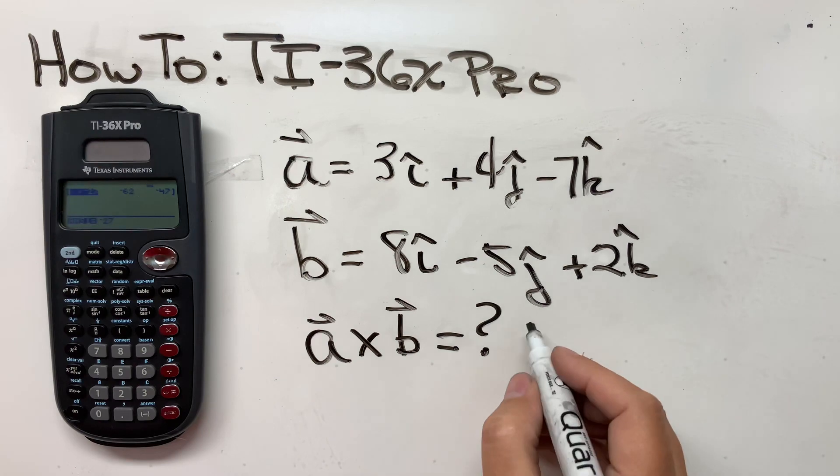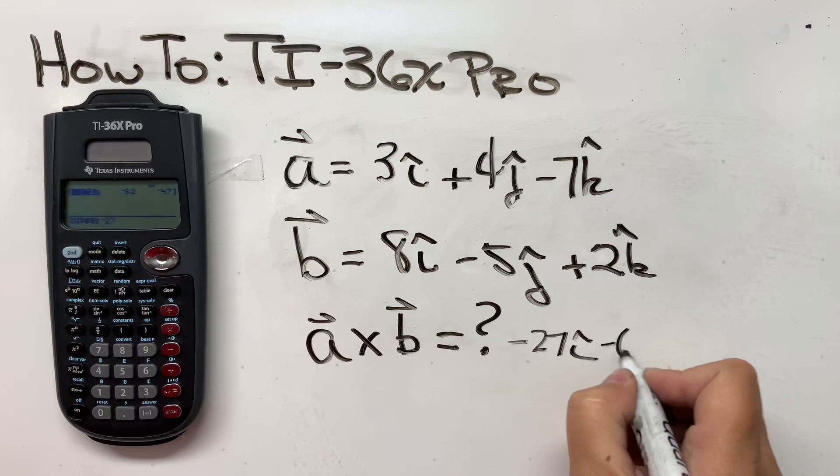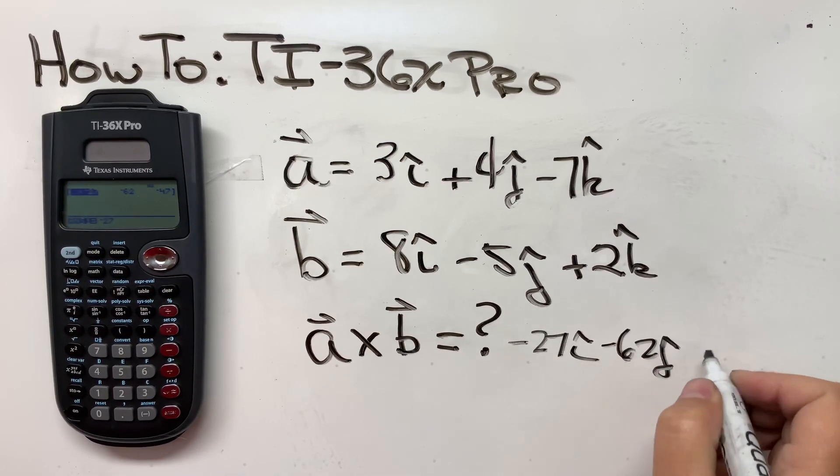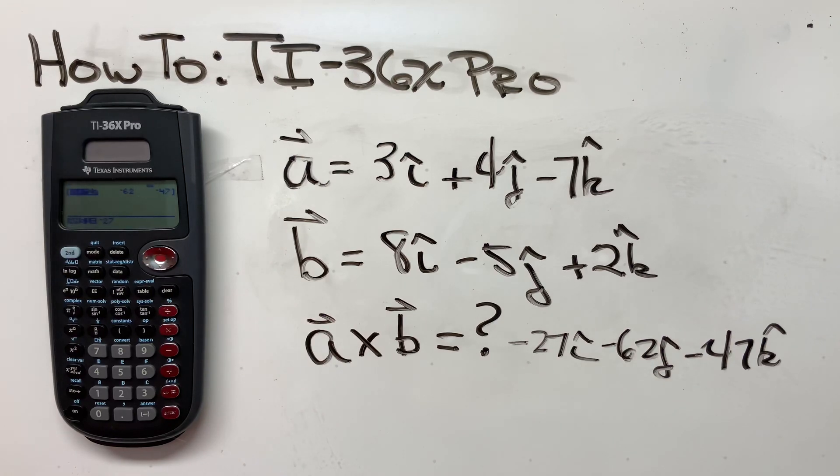Your vector is minus 27 I hat, minus 62 J hat, minus 47 K hat. So there's one way to do a cross product on your TI-36.